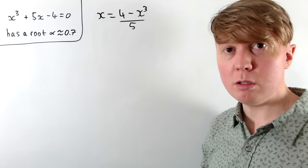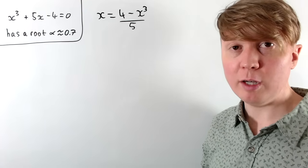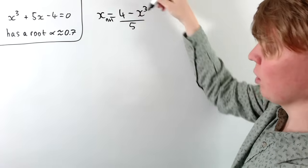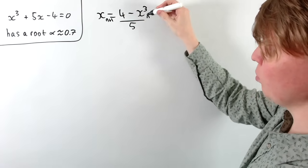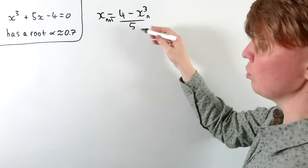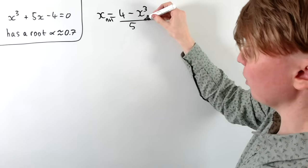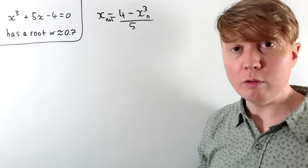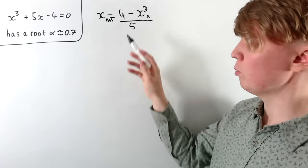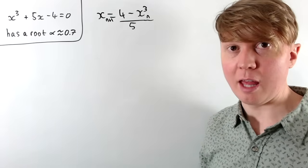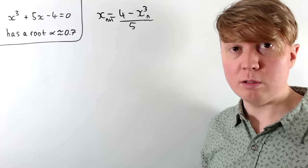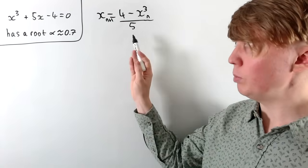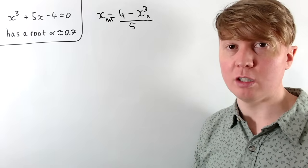We define a sequence where the next term, x_{n+1}, is defined as 4 minus the previous term cubed, all divided by 5. The idea is that because this equation is just the same as our original equation without the subscripts, if our x_n sequence converges to a limit, then that limit will be a solution to our original equation.